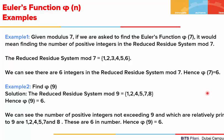Let's look at some examples. If we are asked to find the value of phi of 7, we can see that n is 7. So we have to find the number of elements in the reduced residue system mod of 7. The reduced residue system mod 7 has the elements 1, 2, 3, 4, 5, 6 — there are 6 elements. So phi of 7 is equal to 6.